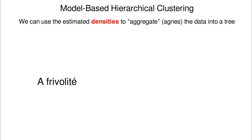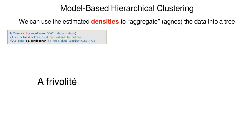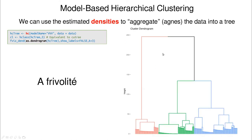As a bonus, let's discuss hybrid methods. Partitioning, hierarchical, and model-based methods don't have to live in separate worlds. Model-based hierarchical clustering replaces the concept of distance — Euclidean, Manhattan, etc. — with a density distance. We use one of the Gaussian models, for instance VVV, within the hierarchical framework, and end up with a dendrogram that also provides probabilities assigned to each cluster.